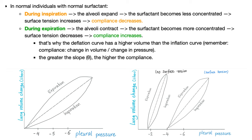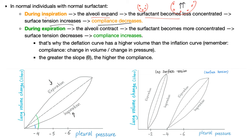Let's talk about inspiration and expiration. During inspiration, the alveoli expand, so the surfactant particles become less concentrated — surface tension gets a chance to increase. When surface tension increases, recoil increases but compliance decreases. That's why inspiration has a lower compliance than expiration. During expiration, the alveoli contract, surfactant becomes more concentrated, surface tension decreases, recoil decreases, and compliance increases.